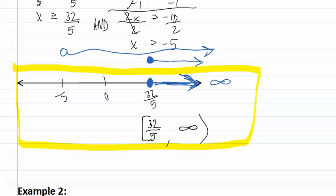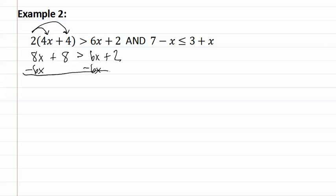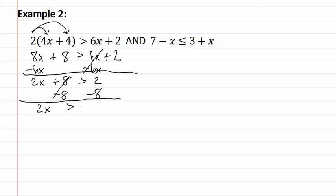Let's look at another example in example two. We must start by distributing before we begin. This gives us 8x plus 8 is greater than 6x plus 2. We then subtract 6x from both sides, giving us 2x plus 8 is greater than 2. Subtract 8 from both sides, which gives us 2x is greater than negative six. And then we divide both sides by two, giving us x is greater than negative three.